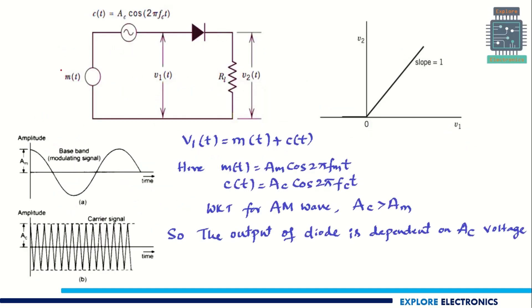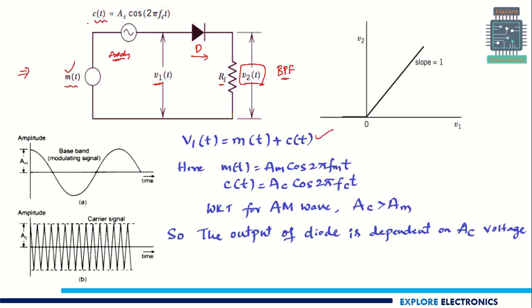Now let us see the circuit. Here, the same switching modulator is shown but the bandpass filter is not shown. Let us see up to V2(t) first. Here we also have M(t), connected in series with C(t) — meaning we are adding these two. Superimposing C(t) and M(t) means it is adding only; the adder is not explicitly shown. The addition of those two will be V1(t). Here we will have a diode and at the output we are taking V2(t) through an RL load resistor.